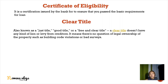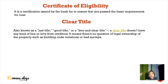Clear title, also known as just title, good title, or free and clear title, doesn't have any kind of lien or claim from creditors. It means there is no question of legal ownership of the property, such as building code violations or other encumbrances. A clear title has no annotation at the back indicating the property is still under mortgage. You should check your title to ensure there is no annotation stating the property is under the mortgage of a specific institution.